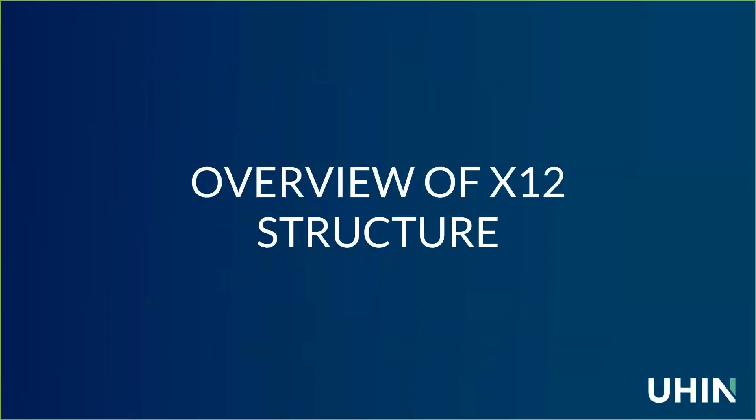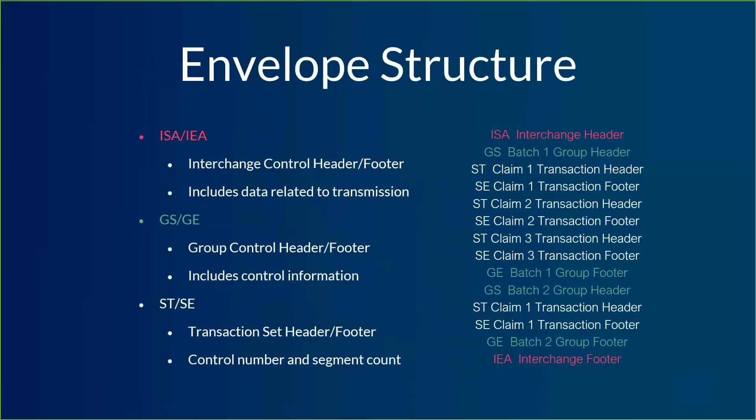Now that we've covered a couple of terms, let's jump into the overview of X12 structure. The first thing is the envelope. If you think of a regular paper business envelope, we're talking about something very similar. Each electronic transaction has an electronic envelope that encapsulates and surrounds the data content — the reason you're sending the file is inside the envelope. At the very top and very bottom of the example, we've got the ISA and IEA. This is the interchange control header and footer, and the ISA/IEA is basically giving us transmission information — it's like an address on an envelope.